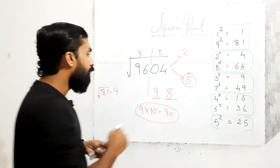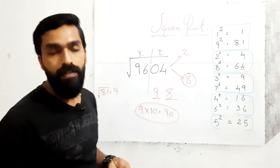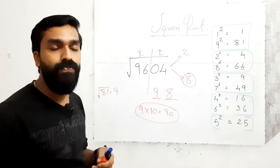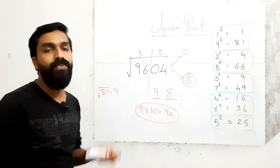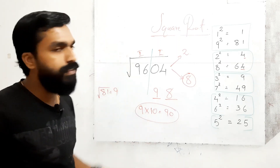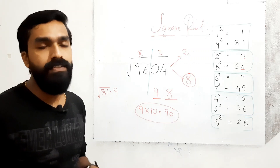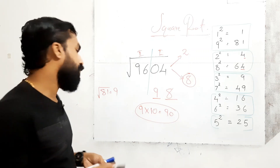Since 96 is greater than 90, we take the greater number option, which is 8. So the answer is 98. The square root of 9604 is 98. This is a very simple method to find the square root. Now let's do a five-digit number.